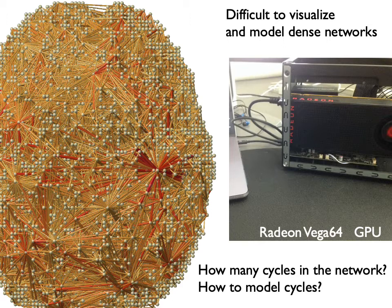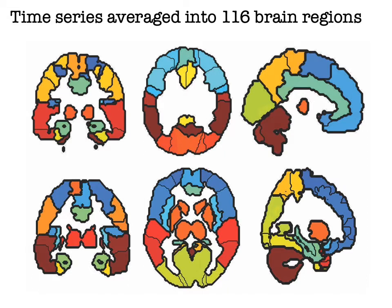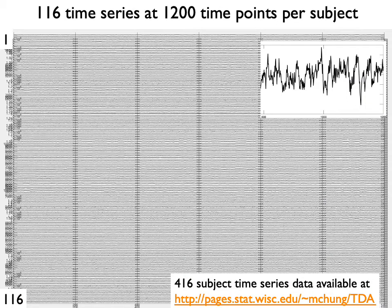So we actually did some sort of data reduction. The data reduction is done using an existing parcellation that partitions the brain into 116 regions — each color represents a specific brain region. We averaged the fMRI time series within each region, giving us a time series where vertically the axis indicates brain regions and the horizontal direction is time. This gives us a 116 by 1,200 matrix available for all subjects, and you can download this dataset with proper credit.